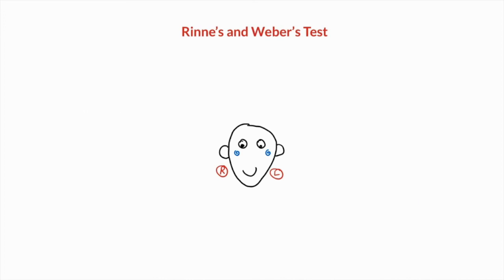That essentially concludes this video tutorial on Rinne's and Weber's test. If you identify that a patient has a unilateral or bilateral hearing loss and it isn't something immediately treatable — for example, an infection — it's important that the patient is referred on for further investigations, including audiometry and more formal hearing tests to determine the underlying cause.